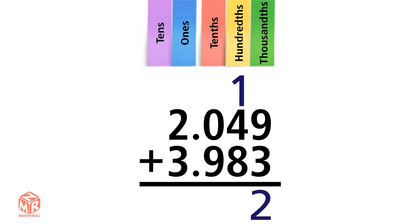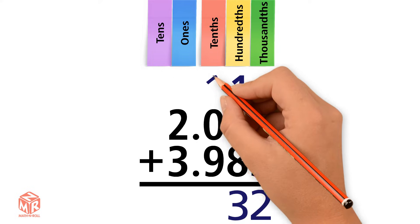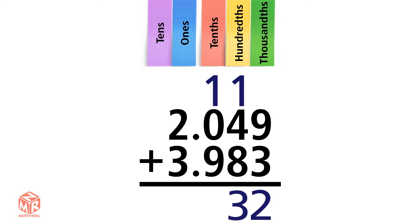Now we add the hundredths. 1 plus 4 plus 8 equals 13. 13 is greater than 9, so we have to regroup again. We're left with three hundredths, which we put in the hundredths column, and one extra tenth, which we put on top of the tenths column. Now we add the tenths. 1 plus 0 plus 9 equals 10. 10 is greater than 9, so we regroup again. We're left with zero tenths, which we write in the tenths column, and one extra one.